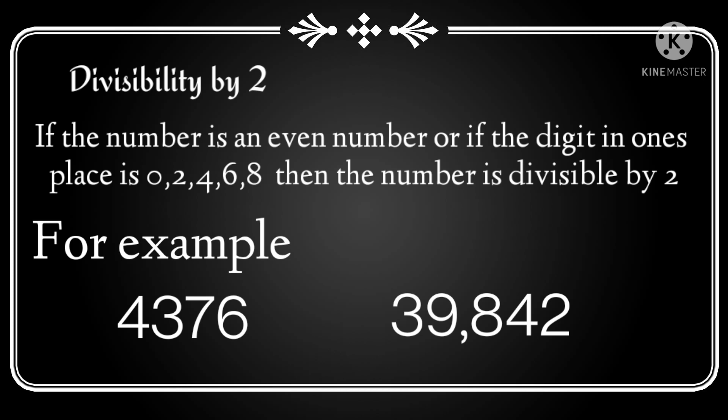So the rule for divisibility by 2 is that the number should be an even number, or the digit in the 1's place of the given number must be 0, 2, 4, 6, or 8. Then the given number is divisible by 2. We can apply this rule for large numbers as well.